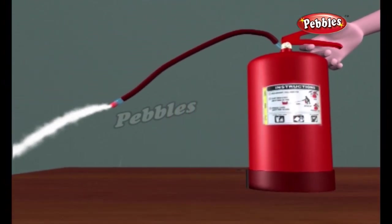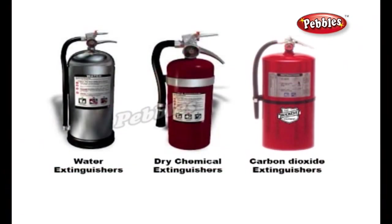The proper way to use the extinguisher is to aim it directly at the fuel rather than the flames themselves, and move the stream with a sweeping motion. There are three main types of extinguishers: water extinguishers, dry chemical extinguishers, and carbon dioxide extinguishers.